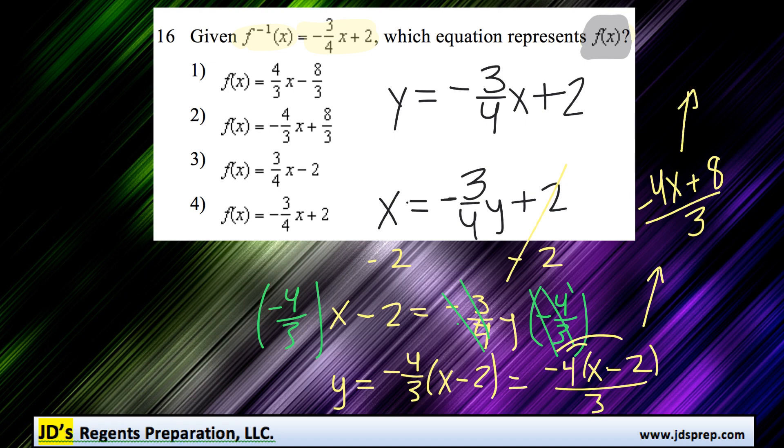For the last step, we'll separate these into two separate terms, and we get negative 4 thirds x plus 8 thirds.